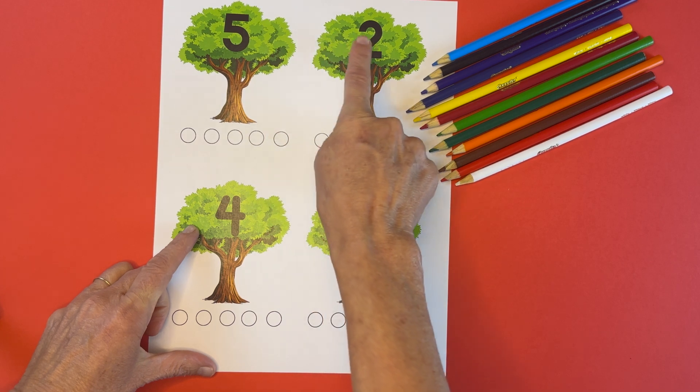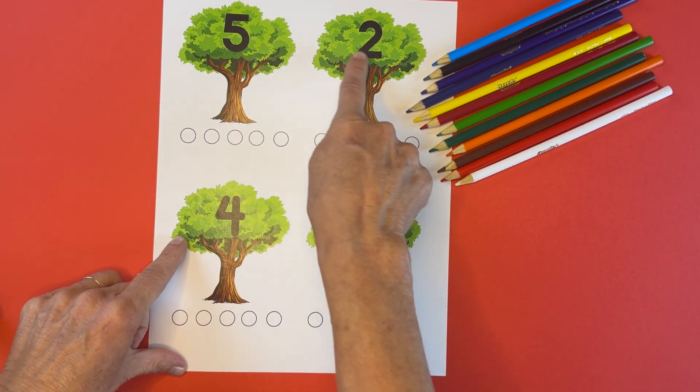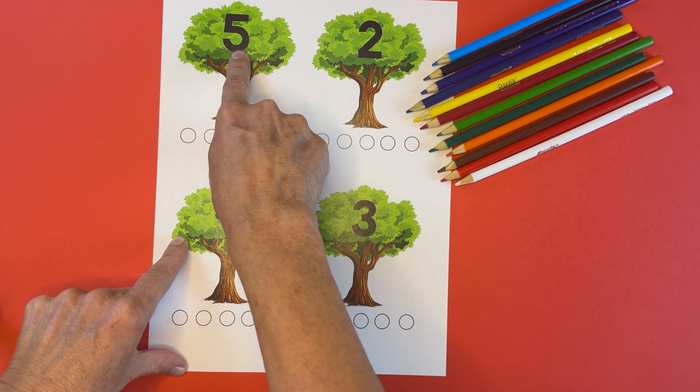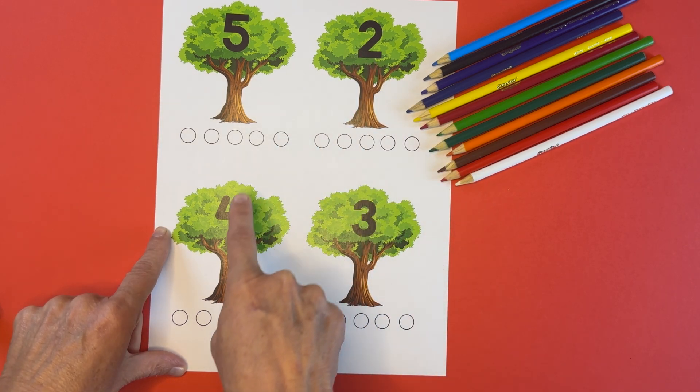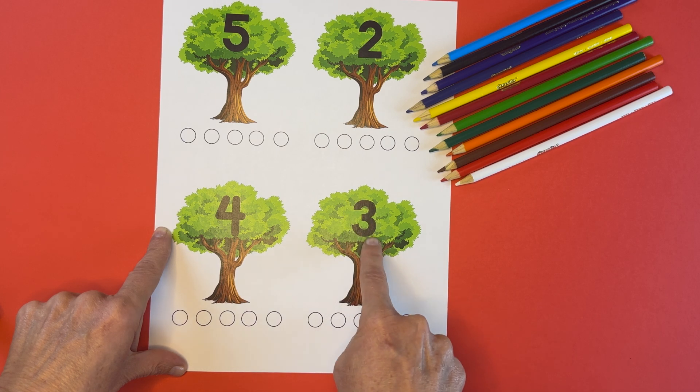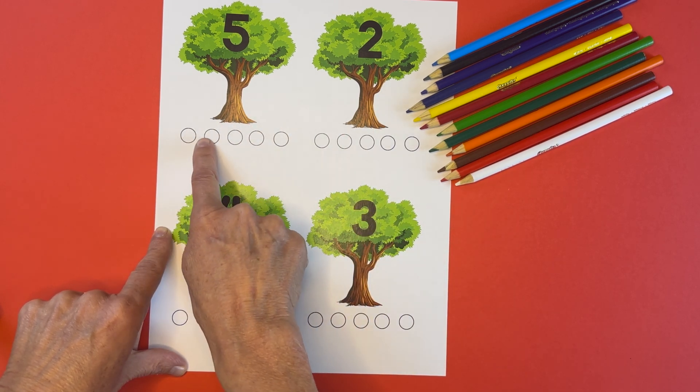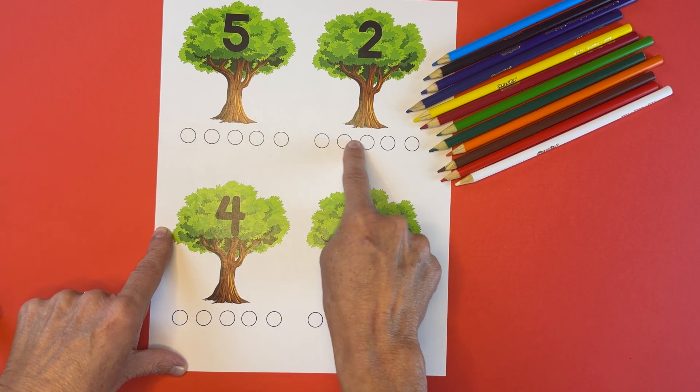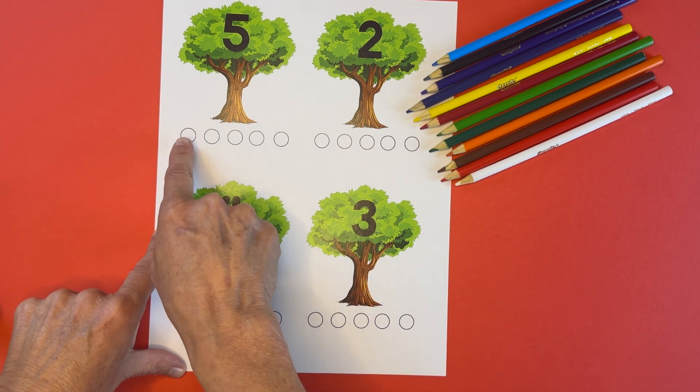What we are going to do is look on each one of these apple trees and see what number is on the apple tree. This tree has number five. This one, two. Down here we have the number four and over here the number three. You'll see these five circles down below each apple. Let's count them and make sure there are five circles.